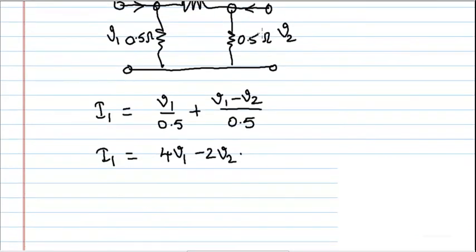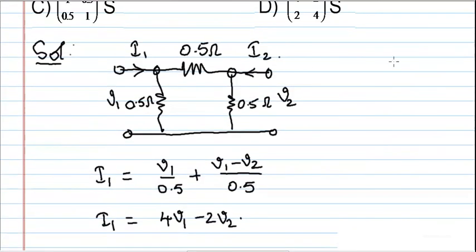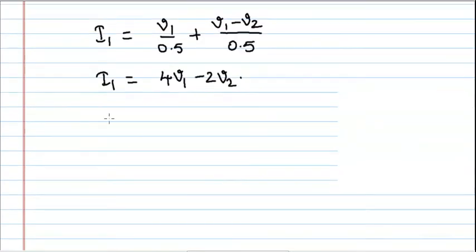At the second node, we have the entering current as I2 and the leaving currents as V2 by 0.5 and V2 minus V1 by 0.5, as shown. That is, I2 equals V2 by 0.5 plus V2 minus V1 by 0.5.